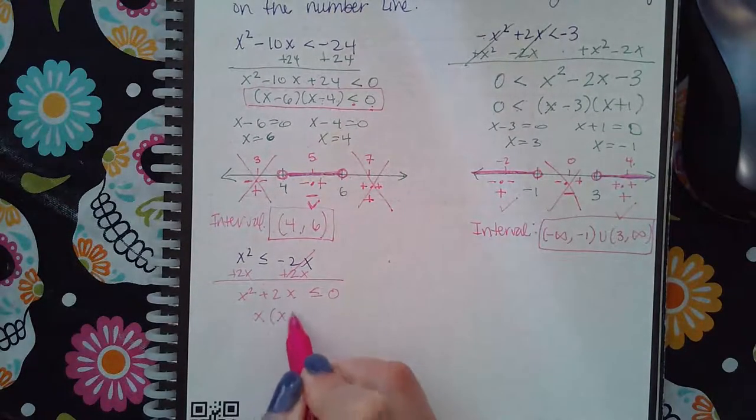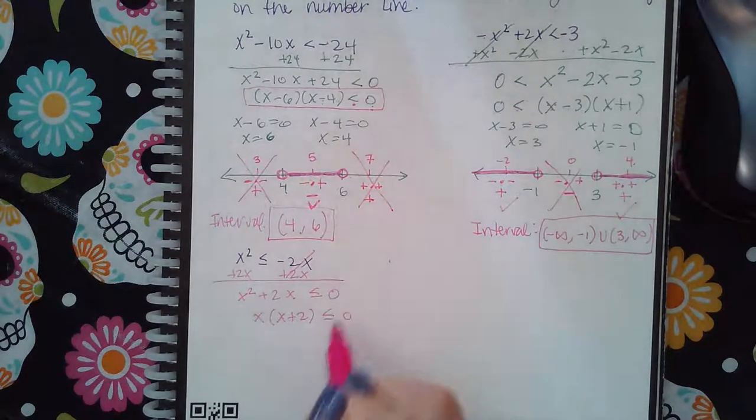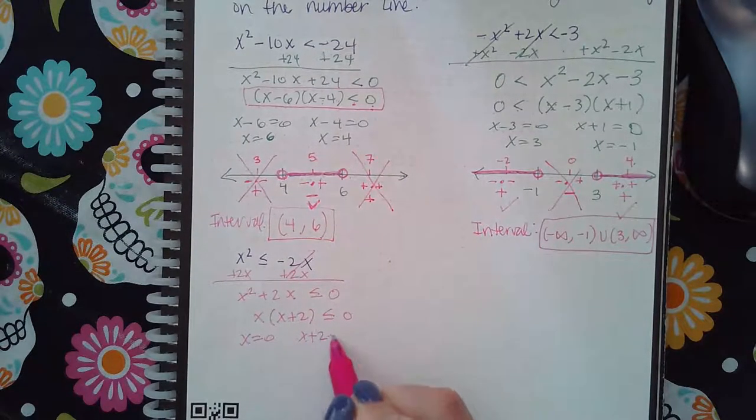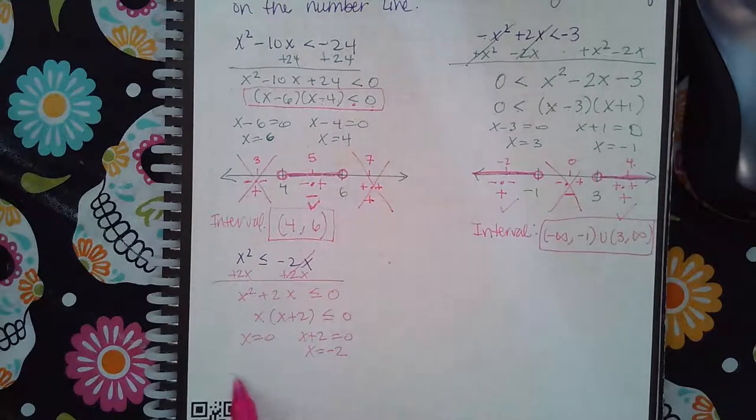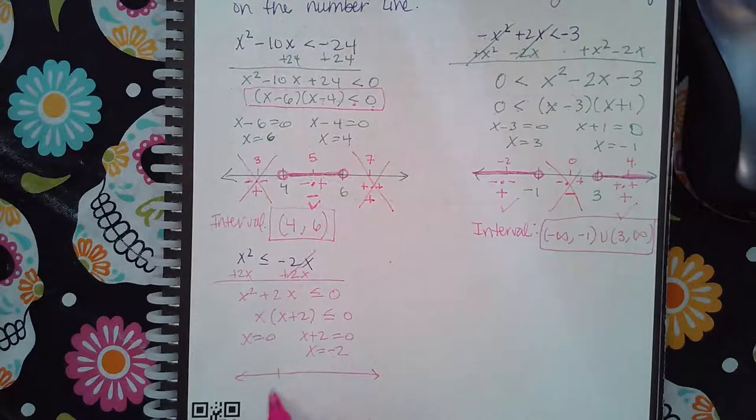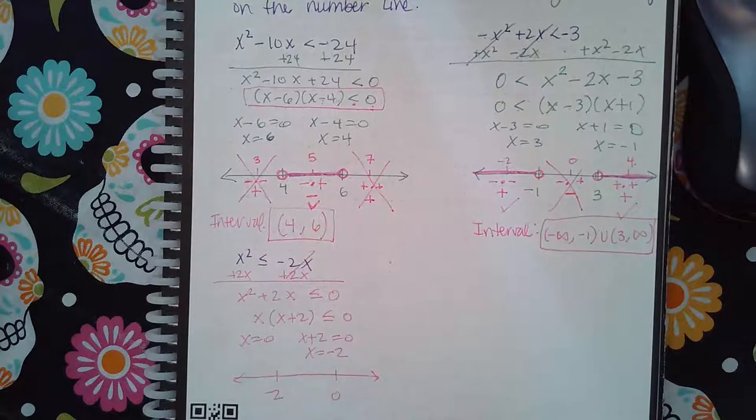And then if I factor this, it's x times x plus 2. So x equals zero, x plus 2 equals zero, so x equals negative 2. And on the number line, negative 2 is on the left, zero is on the right.